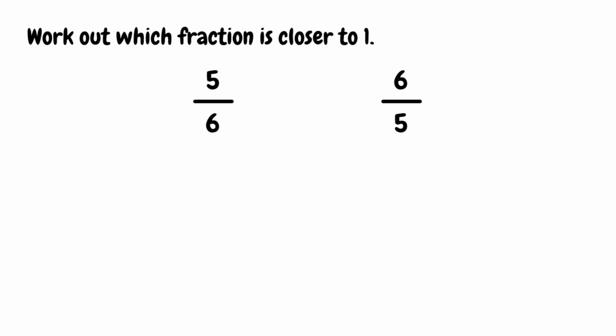For this first question, we want to see which fraction is closest to 1: 5 sixths or 6 fifths. To do this, we want to find equivalent fractions for both fractions that share a common denominator. We look at our denominators, which are 6 and 5, and we look for the lowest common multiple. Going through the multiples of 6 and 5, the first number that is a multiple of both would be 30.